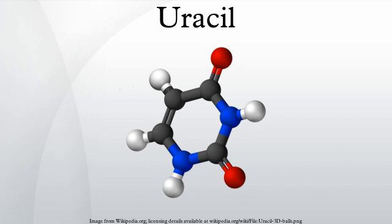The amide tautomer is referred to as the lactam structure, while the imidic acid tautomer is referred to as the lactim structure. These tautomeric forms are predominant at pH 7. The lactam structure is the most common form of uracil.